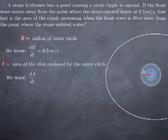So now we have two quantities that vary with time. We know the rate of change of one and want to know the rate of change of the other. To do that, we first need to relate these two variables. In this case, the geometry is simple: we are looking for the area of the disk of radius R. The area is pi multiplied by R squared. In order to derive a relationship between the rates of change from this relationship between A and R, we differentiate this equation with respect to time.